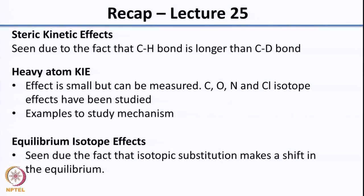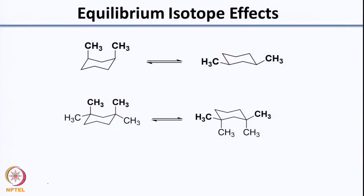Now towards the end we had started looking at equilibrium isotope effects. Equilibrium isotope effects can be very small. Essentially what it is: when you do an isotope substitution it shifts the equilibrium. So we are looking at large K instead of small k, which is the rate constant, and we had started looking at the ring flip of cyclohexane. We will continue with that. In the last class what we had seen is that cyclohexane ring can flip. When you have 1,3-dimethylcyclohexane, the cis dimethyl, you can have the axial-axial and the equatorial-equatorial. The equatorial-equatorial is more stable.